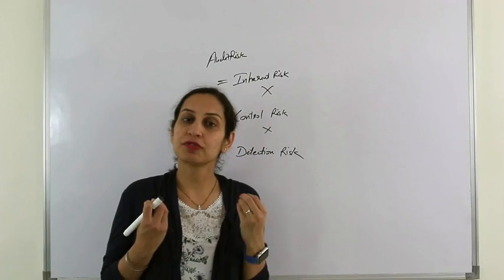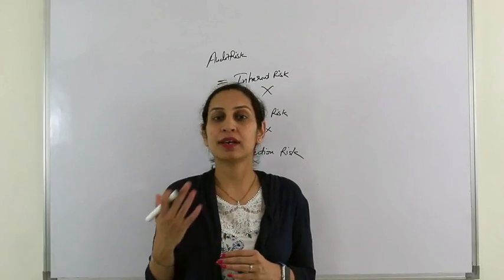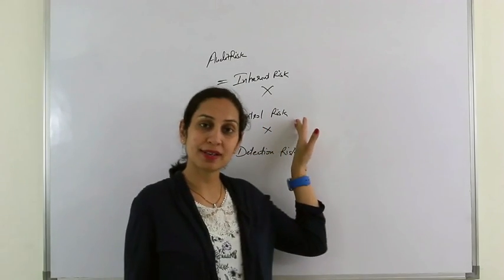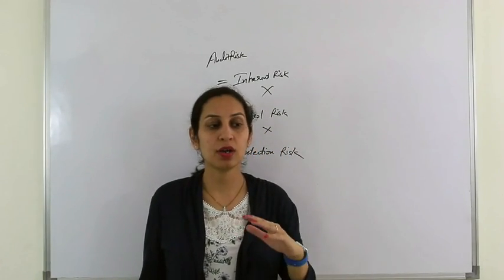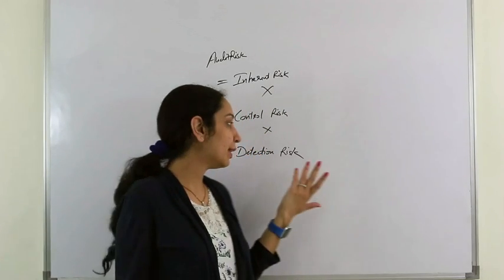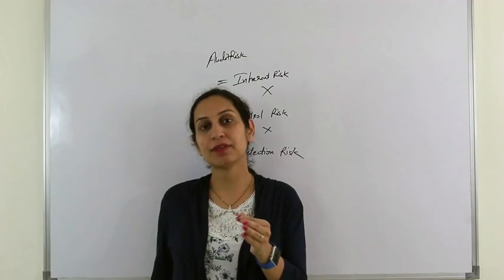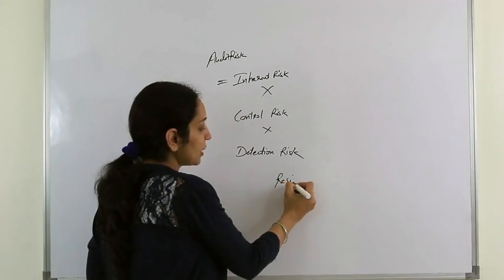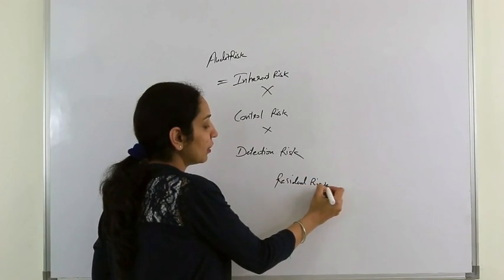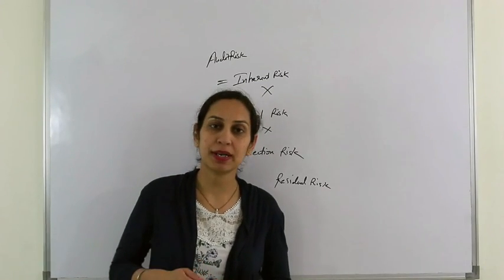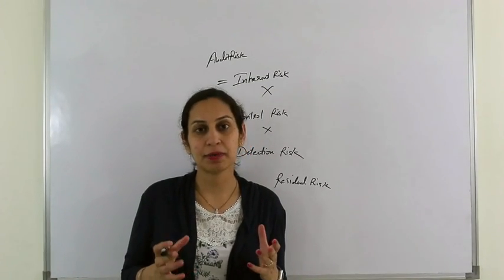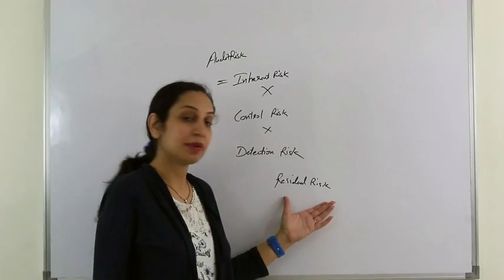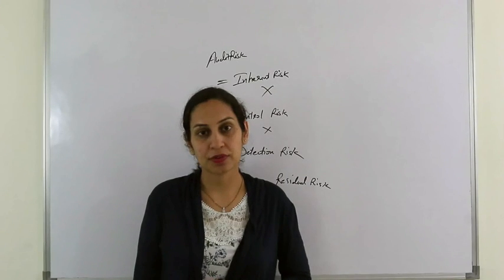So audit risk comprises three major risks: inherent risk (before setting any controls), control risk (where controls have failed), and detection risk (where detective techniques could not detect the risk). Finally there is residual risk — the risk that remains even after all controls have been set. Even if you have taken all processes and measures, some risk may still exist inside the company; we call that residual risk.